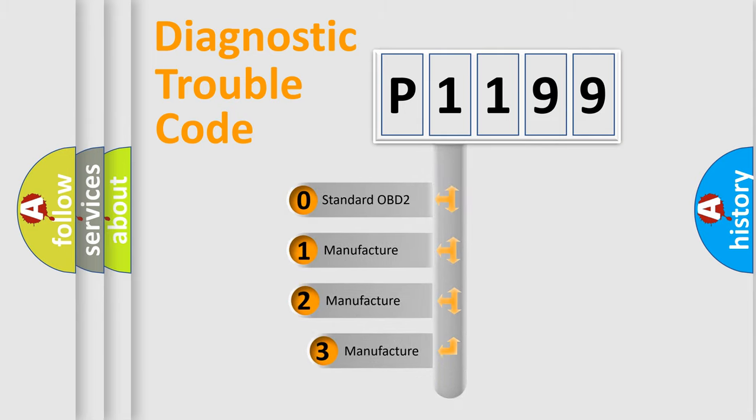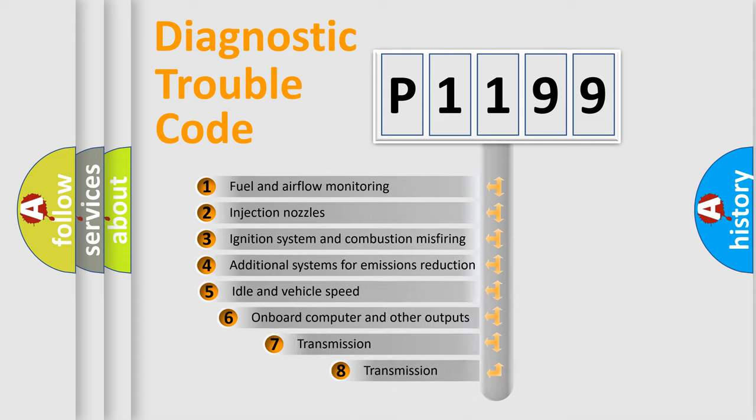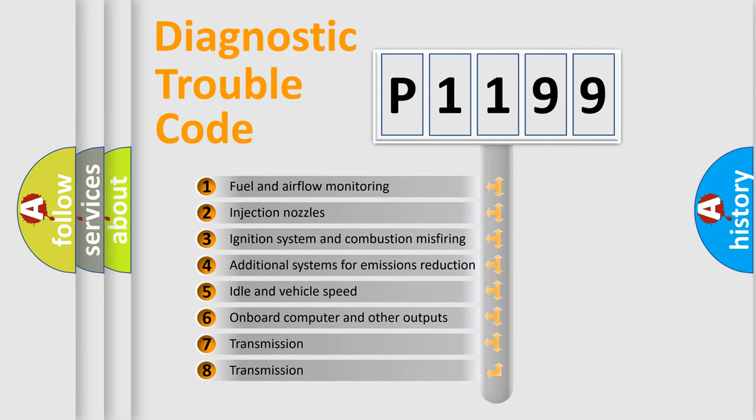If the second character is expressed as zero, it is a standardized error. In the case of numbers 1, 2, or 3, it is a more precise expression of the car-specific error. The third character specifies a subset of errors.